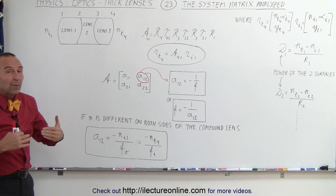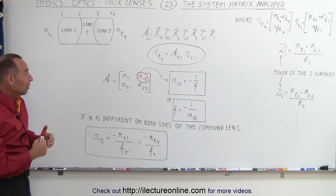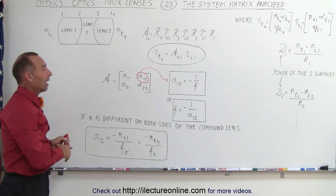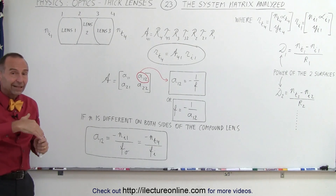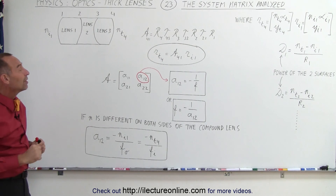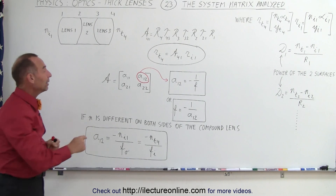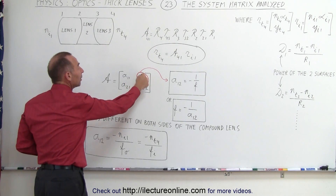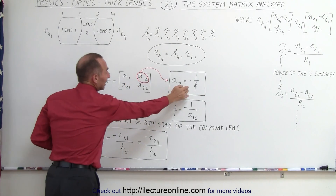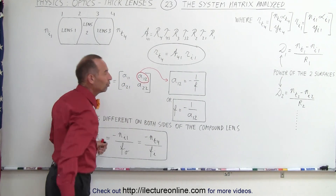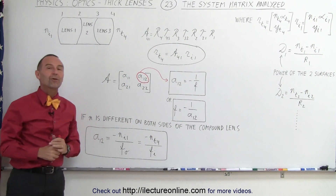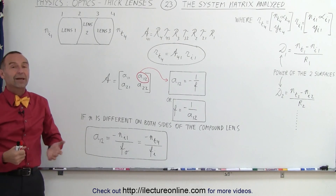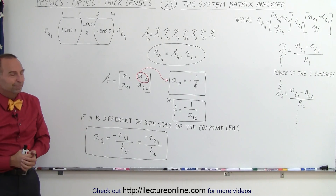At least now we have a better understanding of what we mean by the system matrix, how it's calculated as shown in the previous video, and the meaning of this particular element relative to the effective focal length of the lens, or in this case the compound lens system.